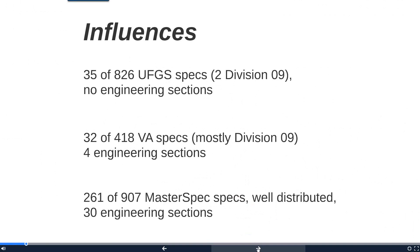We also work with the VA specs for healthcare. They have a little over 400 specification sections and about 32, or roughly 8%, include mock-ups. Most of those occur in Division 9. They do have four engineering sections that require mock-ups.